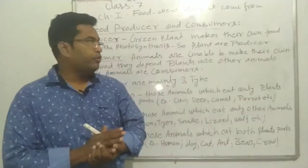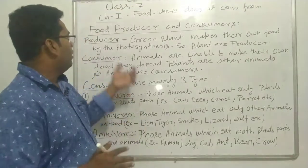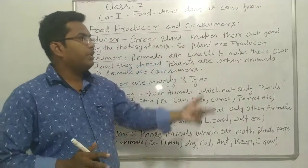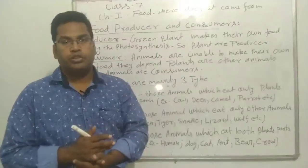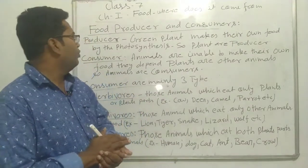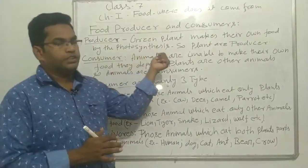Who produces food? Green plants make their own food. Green plants make their own food by the process of photosynthesis.